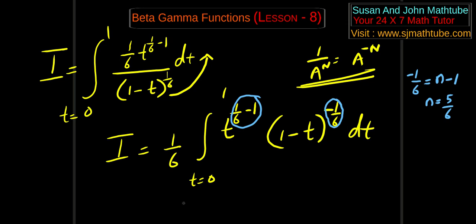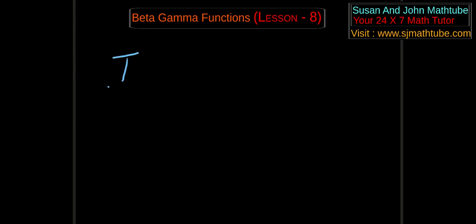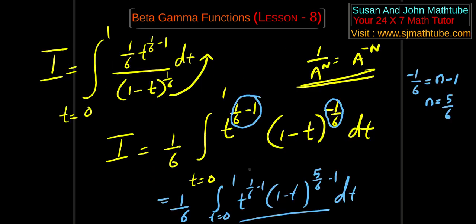So what I do in the next line is 1 by 6, t equal to 0 to 1, t power 1 by 6 minus 1, (1 minus t) to the power 5 by 6 minus 1. Now it looks like the beta function. So that is, I is equal to 1 by 6, beta 1 by 6, 5 by 6. I hope you understood that.